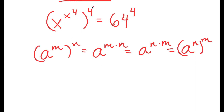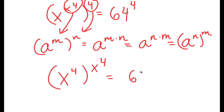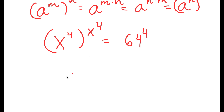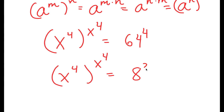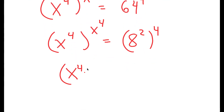So x to the power of x to the power of 4 to the power of 4 equals 64 to the power of 4. In this, I can think of x to the power of 4 as m and 4 as n. So this turns into x to the power of 4, to the power of x to the power of 4, is equal to 64 to the power of 4. Now, 64 to the power of 4 I can rewrite as 8 squared to the power of 4, which turns into 8 to the power of 8.